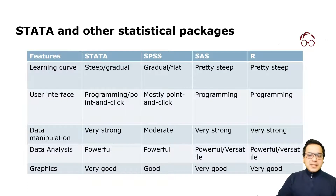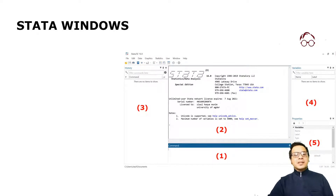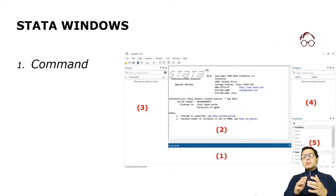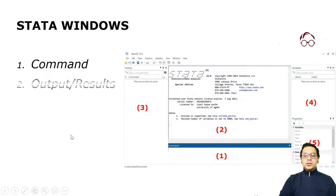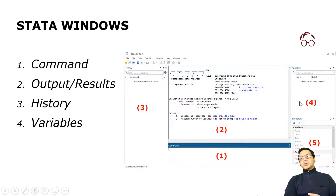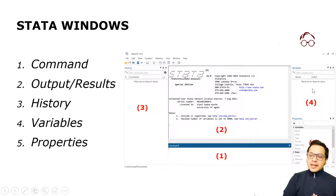That's the comparison of these statistical packages. When you open Stata you will have mainly five windows. The first one is the command window, marked as one, where we put our commands. We get the output in window two. We have a history of our commands in the third area. When we upload data the variables appear in another panel, and when you click a variable you will see its properties in the properties window.